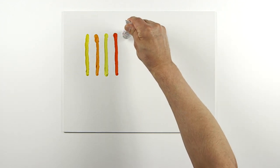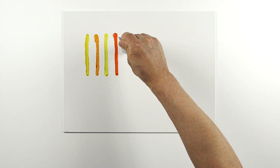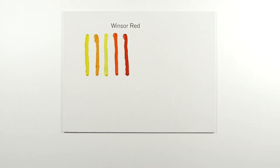Winsor Red is permanent and lightfast, a warm mid-range red with orange undertones.